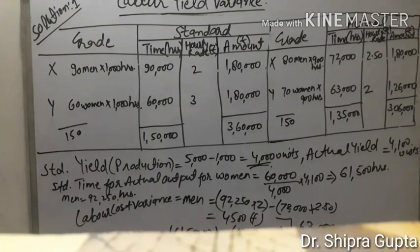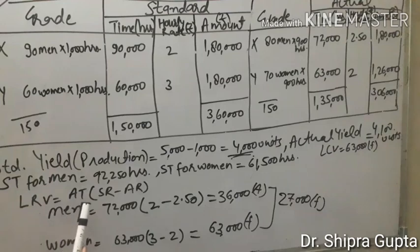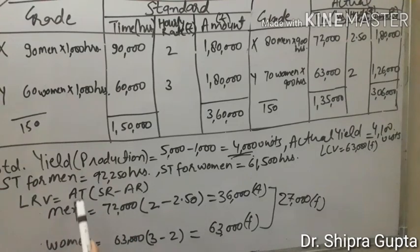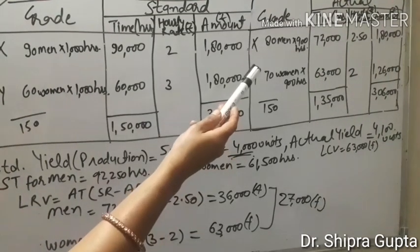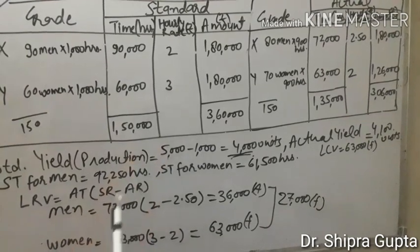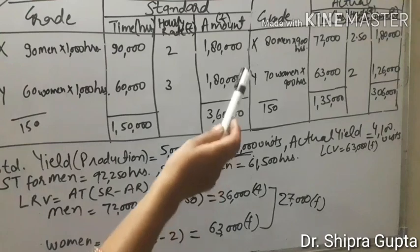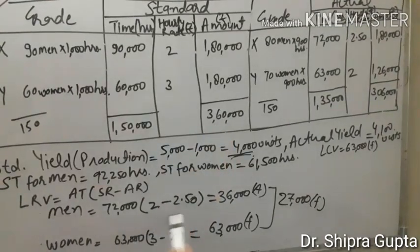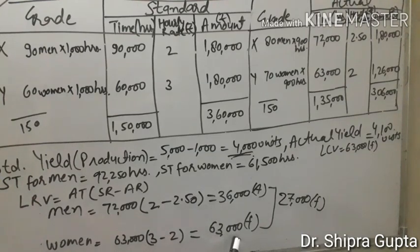We will now calculate labor rate variance. The formula is actual time × (standard rate − actual rate). For men: actual time 72,000, standard rate 2, actual rate 2.50 — result is 36,000 adverse. For women: actual time 63,000, standard rate 3, actual rate 2 — result is 63,000 favorable. Combined answer: 27,000 favorable.